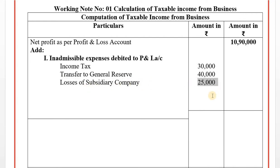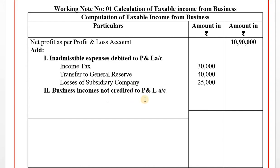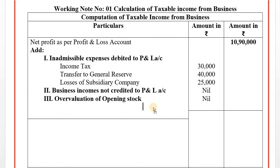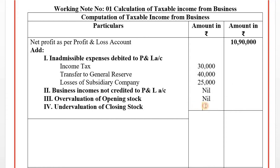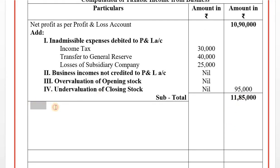Losses of subsidiary company - the expenses of that company are a loss, so disallowed. There are no details for business incomes not credited to profit and loss account (nil), overvaluation of opening stock (nil), or undervaluation of closing stock (nil). Inner column total: 30,000 + 40,000 + 25,000 = 95,000. Sub-total: 10,90,000 + 95,000 = 11,85,000.